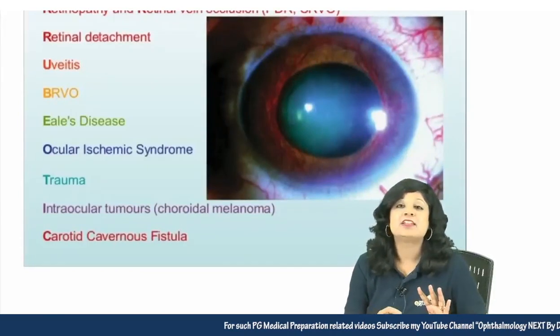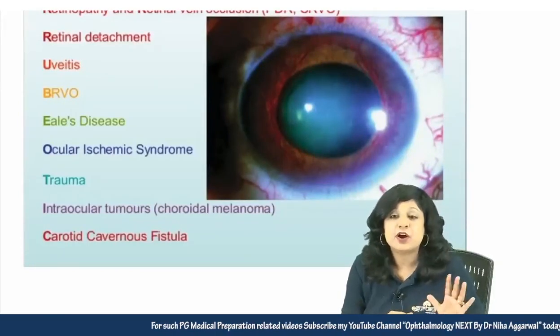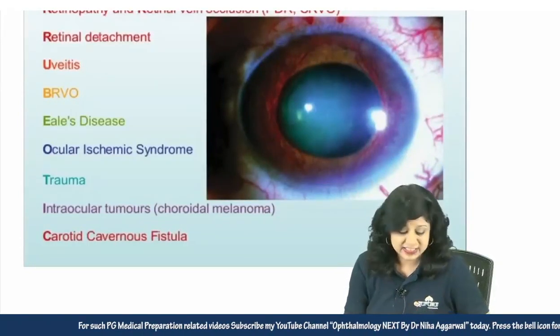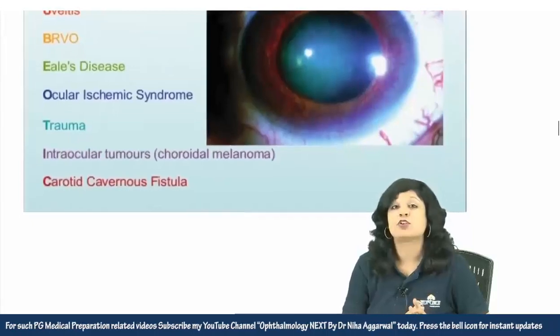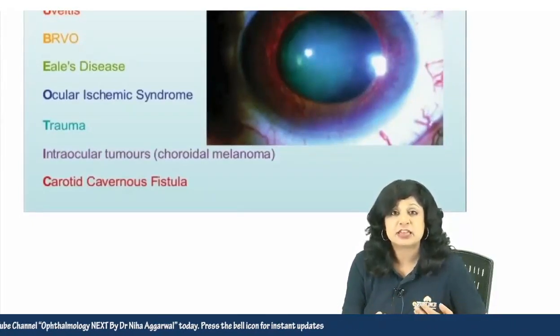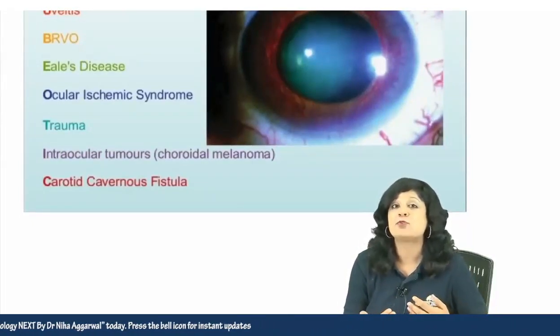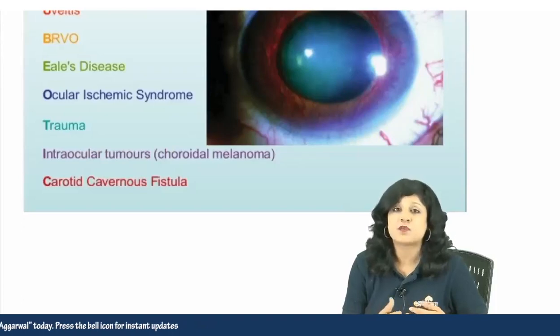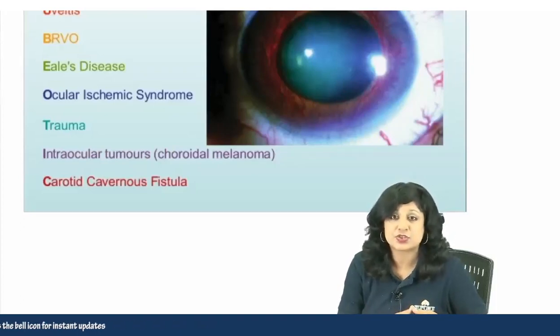Then is E, E for Eales disease. Next is O for ocular ischemic syndrome — whenever you have ischemia, you have proliferation and neovascularization.